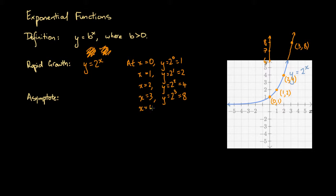Let's have a look at x equals 4. At x equals 4, we get y equals 2 to the power of 4 — that's 2 times 2 times 2 times 2, which equals 16. What about x equals 5? At x equals 5, we get y equals 2 to the power of 5, so 2 times 2 times 2 times 2 times 2: 2 times 2 is 4, times 2 is 8, times 2 is 16, times 2 is 32.